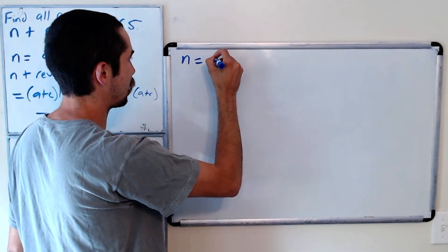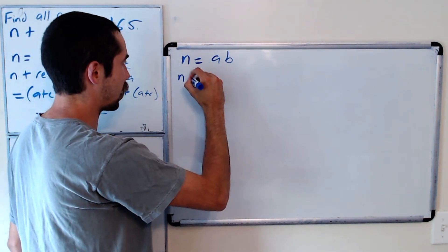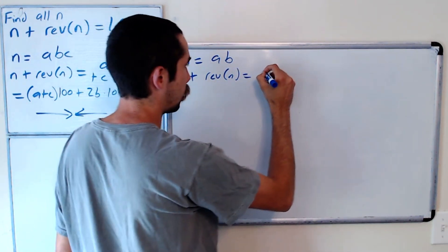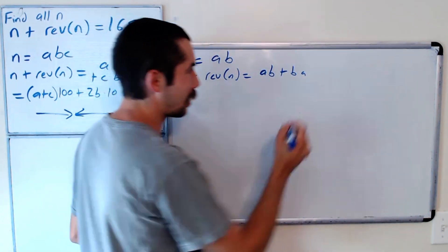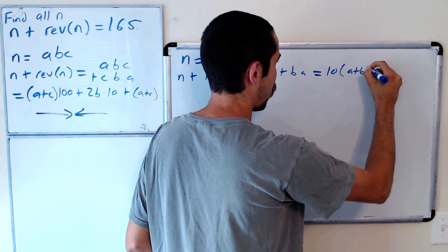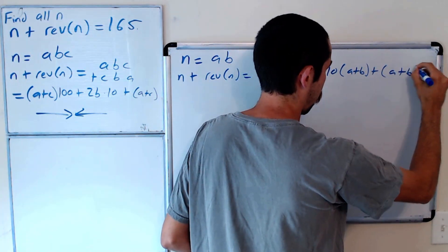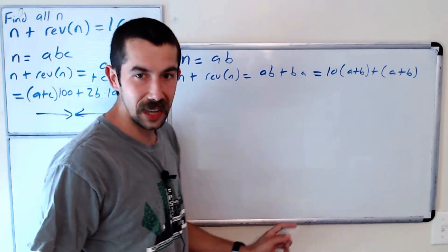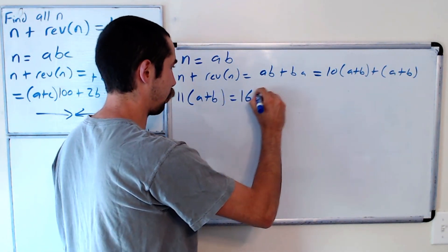So we'll say n equals AB. Then n plus reverse n equals AB plus BA, which we can rewrite as 10 times (a plus b) plus (a plus b). This is 11 times (a plus b), and it equals 165.